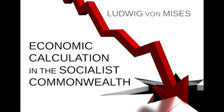But in that case, calculation by exchange value furnishes a control over the appropriate employment of goods. Anyone who wishes to make calculations in regard to a complicated process of production will immediately notice whether he has worked more economically than others or not. If he finds, from reference to the exchange relations obtaining in the market, that he will not be able to produce profitably, this shows that others understand how to make a better use of the goods of higher order in question. Lastly, calculation by exchange value makes it possible to refer values back to a unit. For this purpose, since goods are mutually substitutable in accordance with the exchange relations obtaining in the market, any possible good can be chosen. In a monetary economy, it is money that is so chosen.